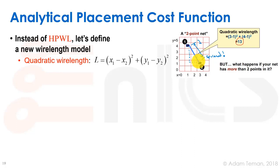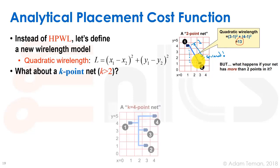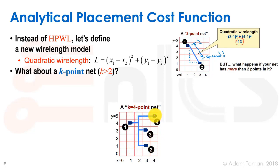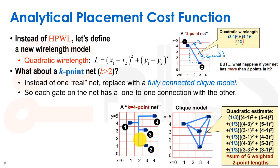This is a simple two-point net representation, but what happens when we have more than two points in a net? If we have a k-point net with k larger than two — for example, a gate with a fan-out of three giving us four connected pins — with the half-perimeter wire length we just put a bounding box around it. But we can't really do that in this case. So what we'll do is use what we call a fully connected clique model.